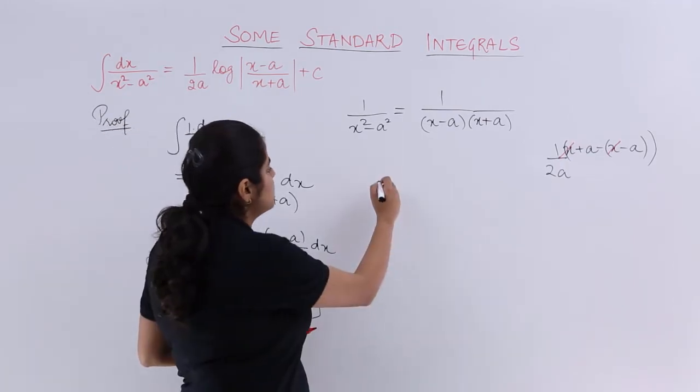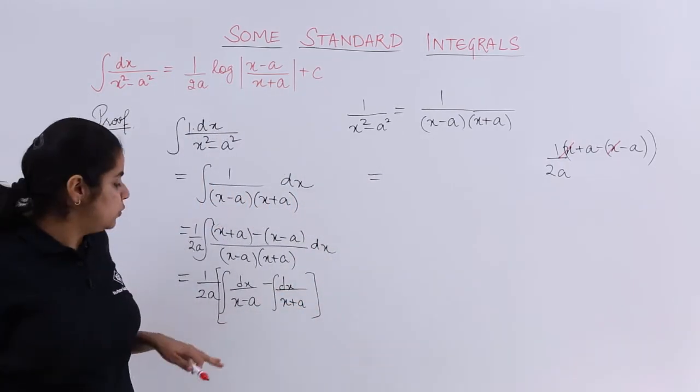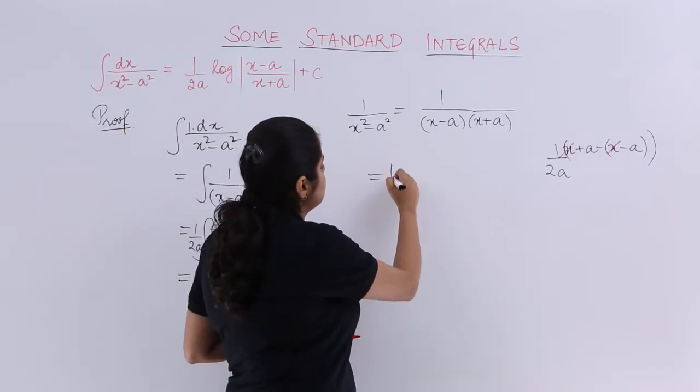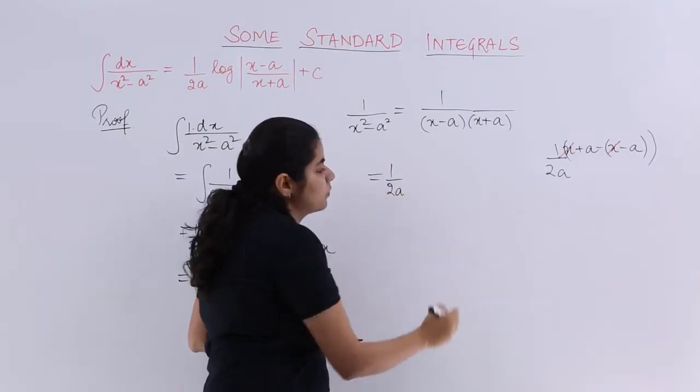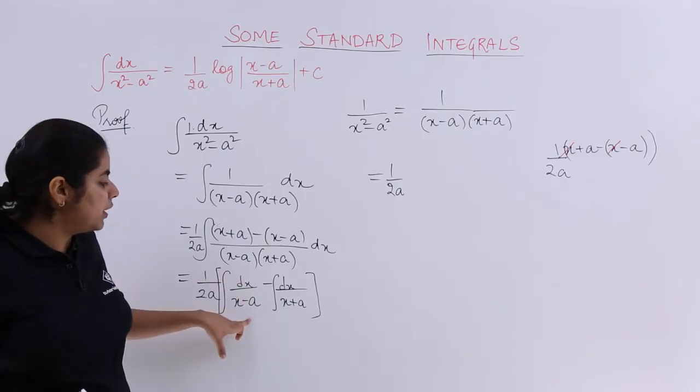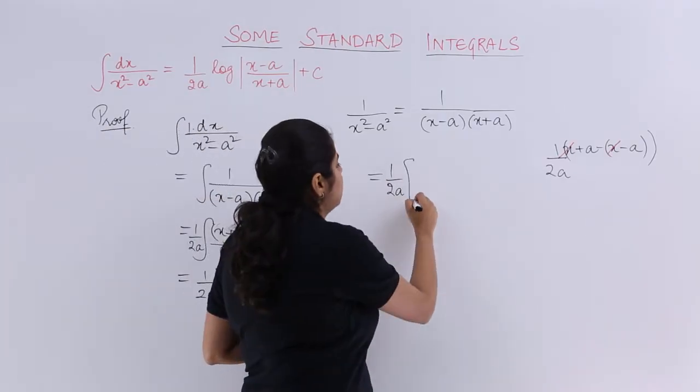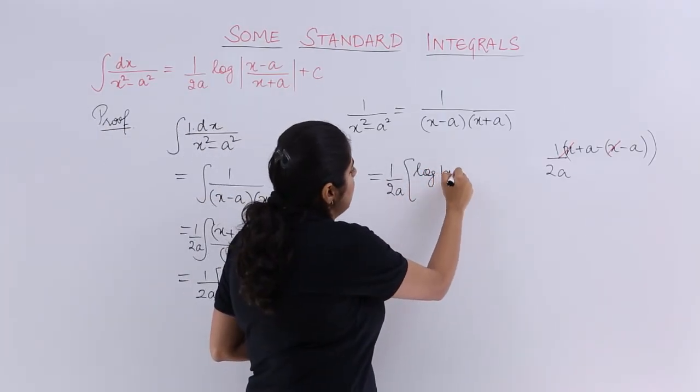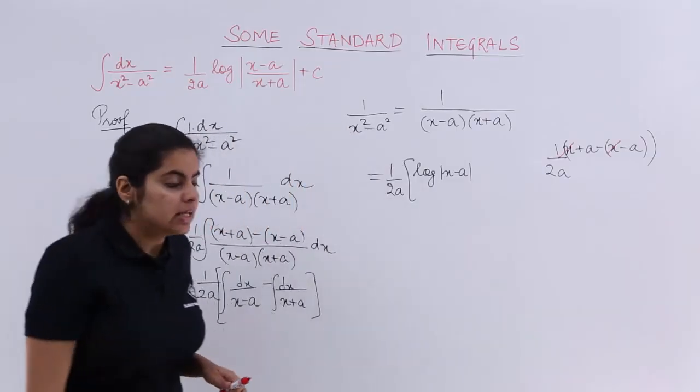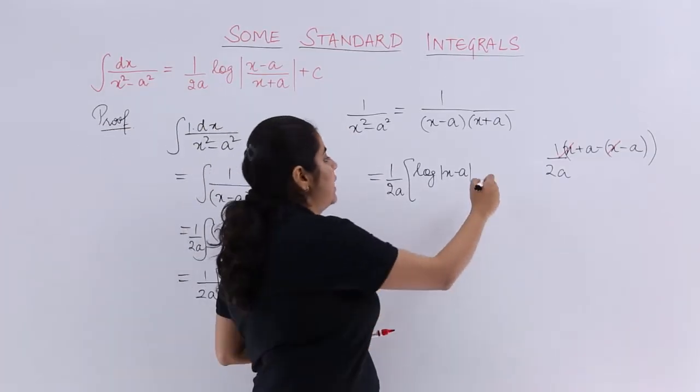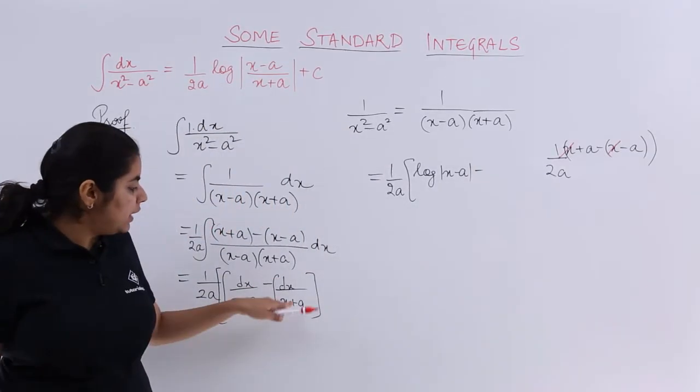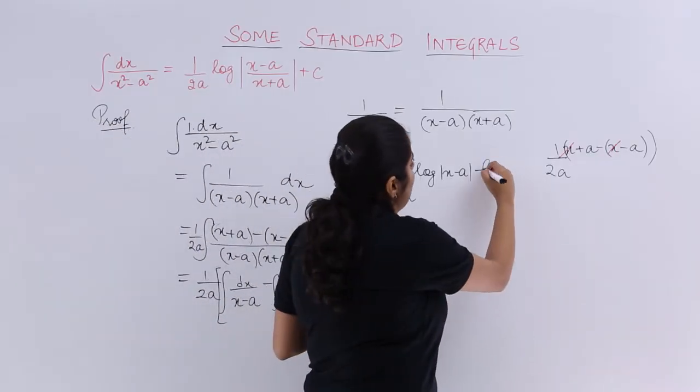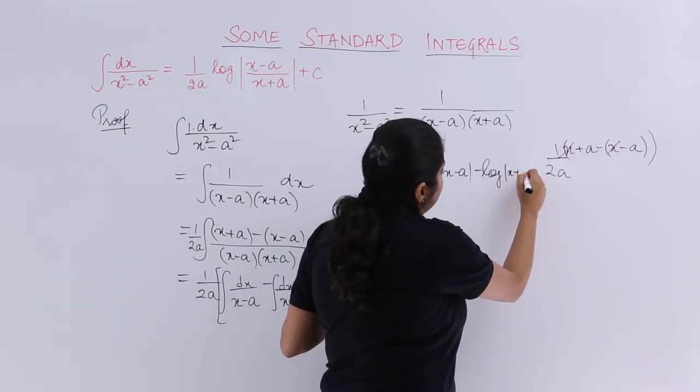Next column gives me the other part of the solution: 1 upon 2a as it is. Then, what is the integration? 1 upon x minus a. It becomes nothing but log x minus a. Then I have minus. Again, it is minus. Then it is 1 upon x plus a integration log x plus a.